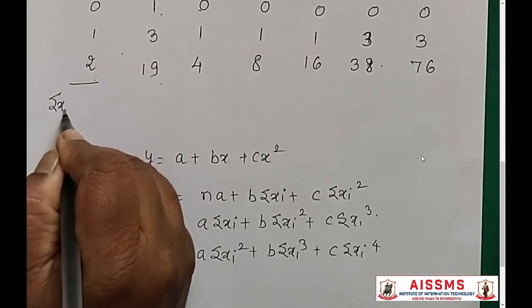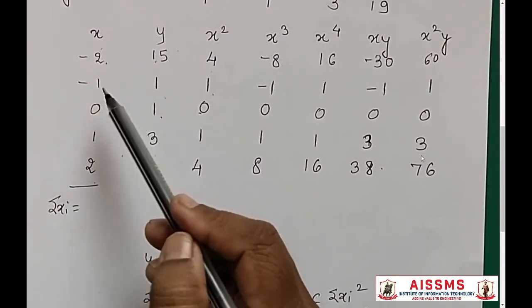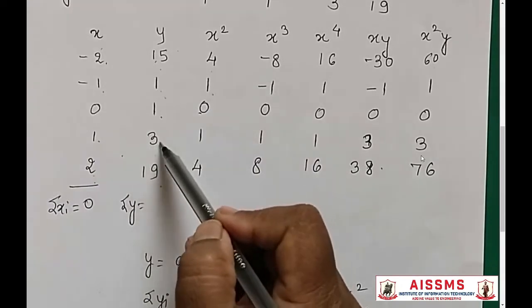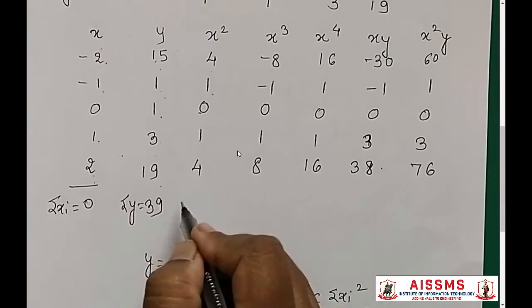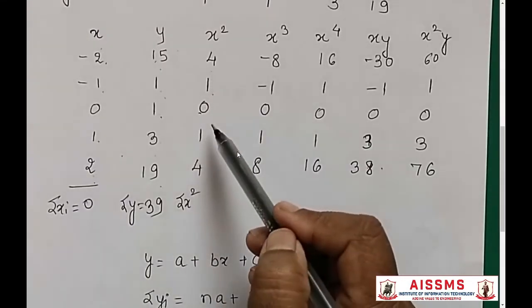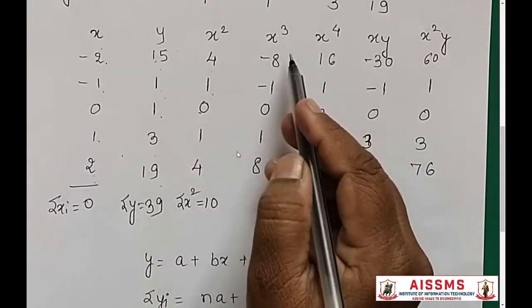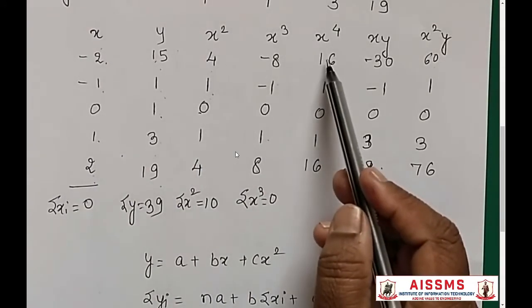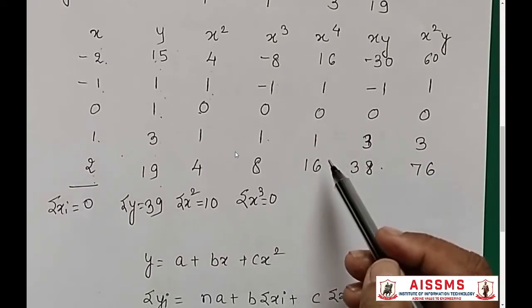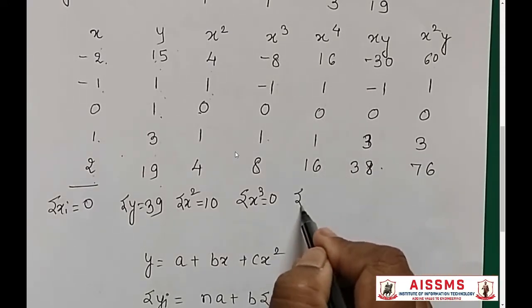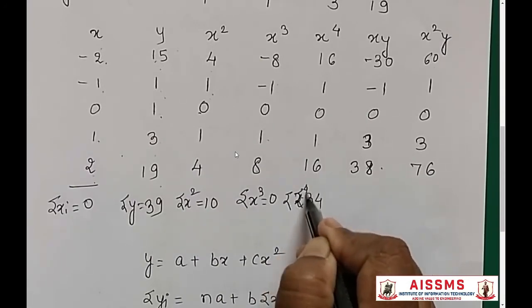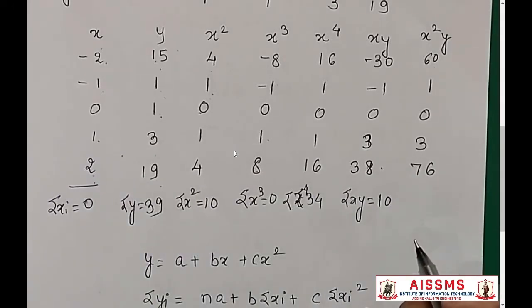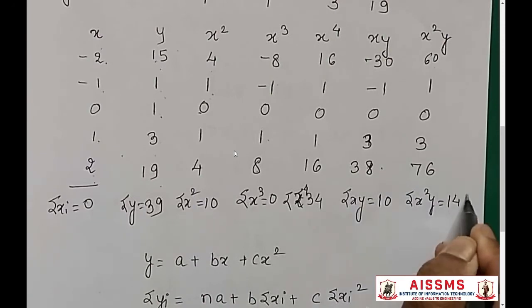Now you have to take summation of xi. Summation of xi: minus 2 minus 1 plus 0 plus 1 plus 2 equals 0. Summation of y equals 15 plus 1 plus 1 plus 3 plus 19, which comes out to be 39. Summation of x² comes out to be 4 plus 1 plus 0 plus 1 plus 4 equals 10. Summation of x³: minus 8 plus 8 cancel, minus 1 plus 1 cancel, so summation of x³ is 0. x⁴: 16 plus 1 plus 0 plus 1 plus 16 equals 34. Summation of xy comes out to be 10. Summation of x²y comes out to be 140.